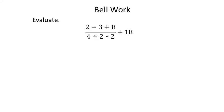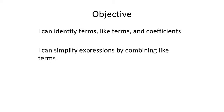For this bell work we're just going to put it straight into the calculator with the n over d button. So n over d, 2 minus 3, then plus 8, then go down to the denominator: 4 divided by 2 times 2. Get out of the fraction before putting that plus 18 in there, push enter, and the calculator gives me directly 79 fourths. We do want the improper fraction, not the mixed number or the decimal.